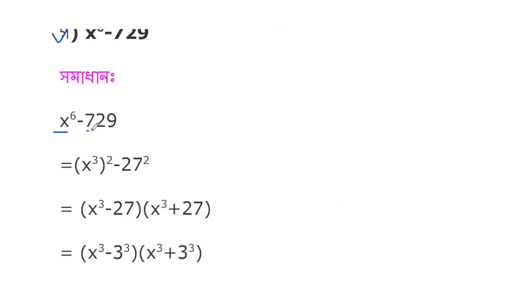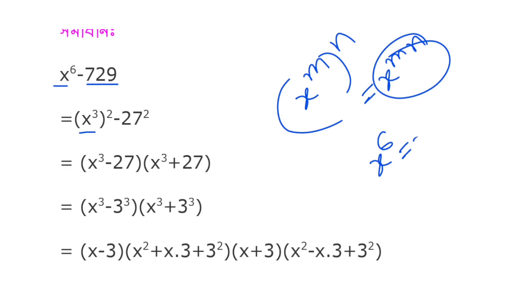x⁶-729 can be written as (x³)²-27². This is a difference of squares, so I can factor it as (x³-27)(x³+27).